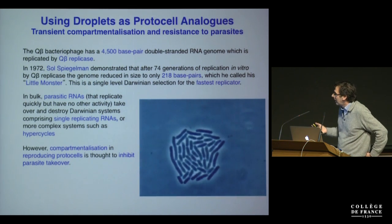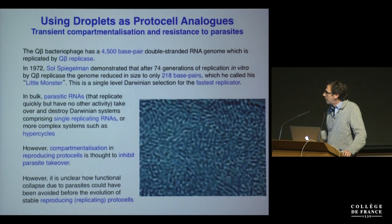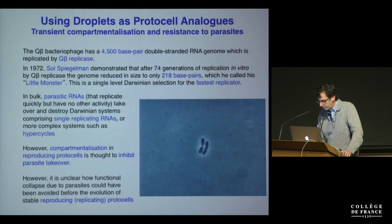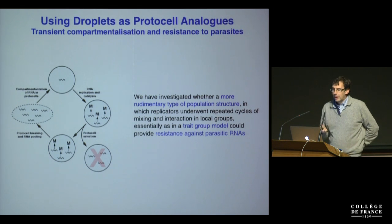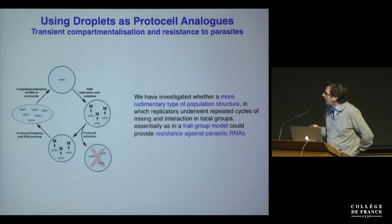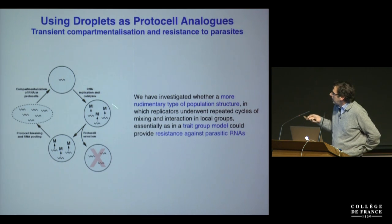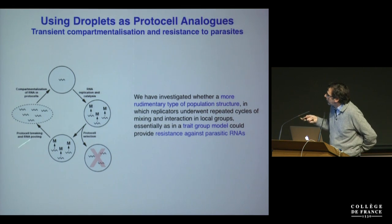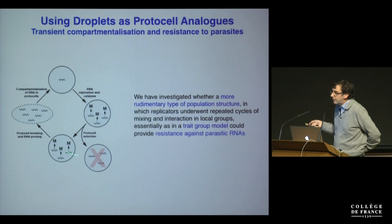Compartmentalization in reproducing protocells is thought to inhibit parasite takeover. But the problem is: how could functional collapse due to parasites have been avoided before the evolution of stable reproducing protocells? It's a chicken-and-egg problem. We set out to investigate whether a more rudimentary type of population structure — where replicators undergo cycles of mixing and interaction in local groups, a so-called trait group model — could also provide resistance against parasitic RNAs. The idea is that you have a pool of RNAs compartmentalized into protocells; replication and catalysis happen inside; the compartments where you have active catalysts essentially survive, and more RNAs from these compartments get passed on compared to compartments infested by parasites with no functional activity.